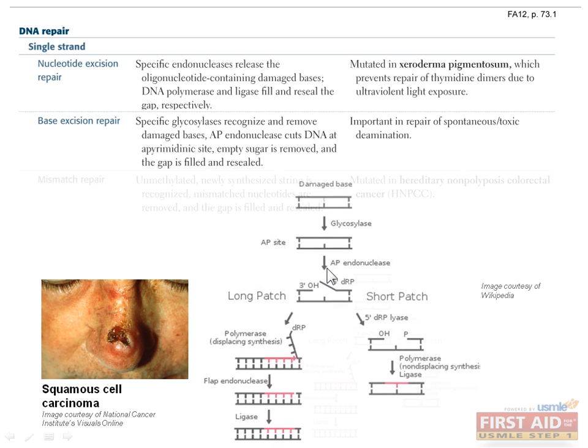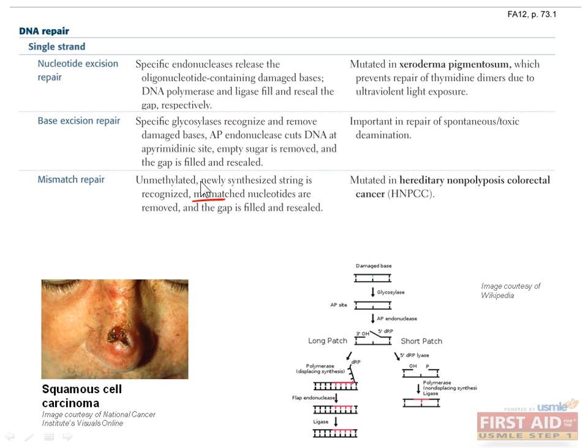The last type of single strand repair pathway is mismatch repair, and this fixes mutations that have resulted in DNA mismatch, which is when bases that are lined up in a complementary sequence don't match. For example, in this case, T and G don't match. This can happen during DNA replication, since the DNA polymerase proofreading is good but not perfect.